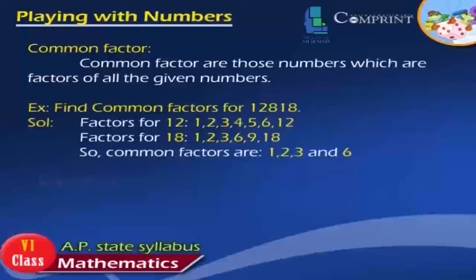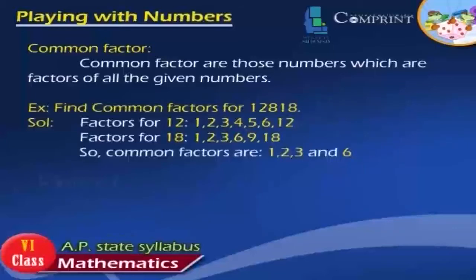Common Factors — Example: Find the common factors of 12 and 18. Solution: Factors of 12 are 1, 2, 3, 4, 6, 12. Factors of 18 are 1, 2, 3, 6, 9, 18. So, the common factors of 12 and 18 are 1, 2, 3, and 6.